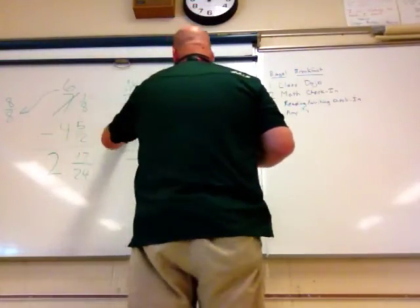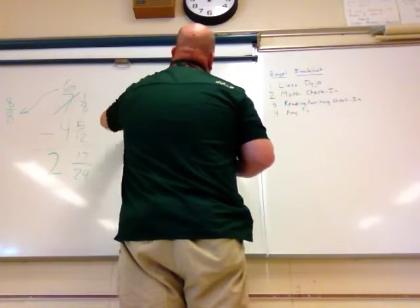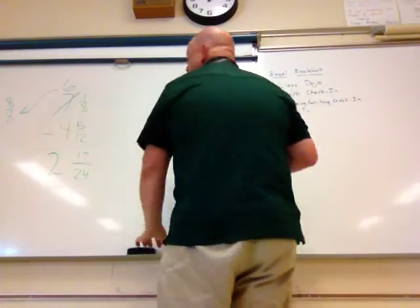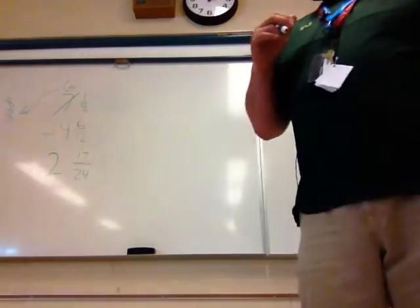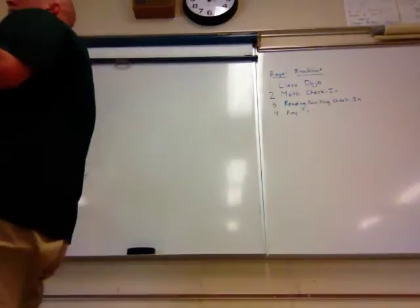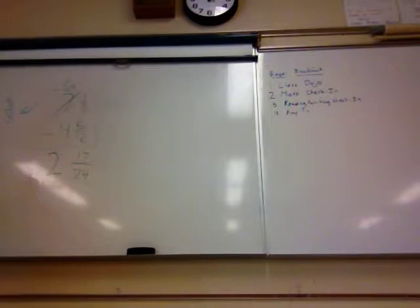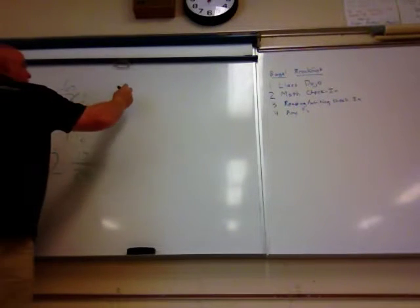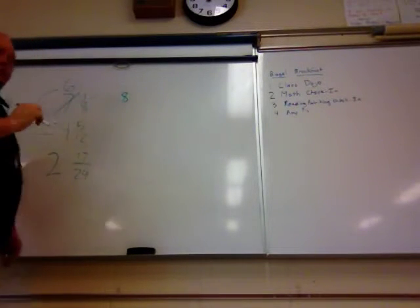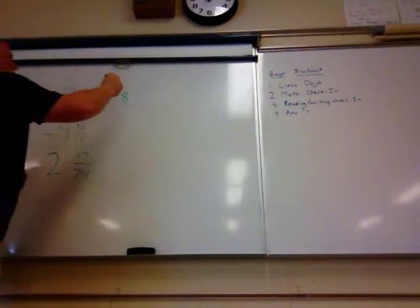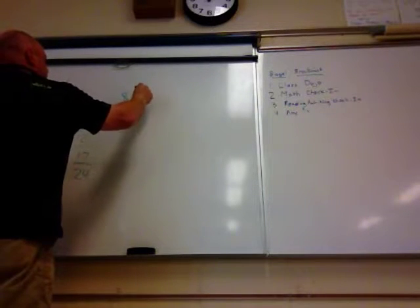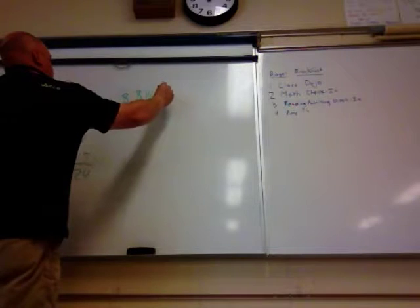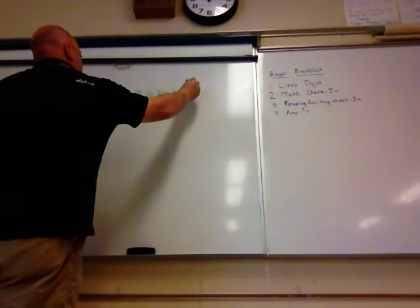Now there's another way we can tackle this problem. We could list the multiples — the skip counting — for 8 and 12, and see if we can find a smaller common denominator, because we discovered it got pretty large. And we got the problem done, but can we find an easier way? So help me out with my 8s. Use your tools if you need to. Help me count by 8s — go ahead. 8, 16, 24, 32, 40. Let's stop there.